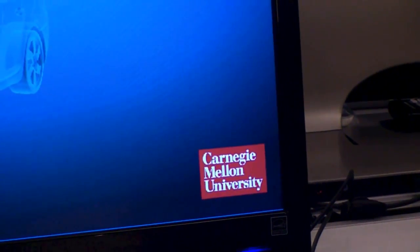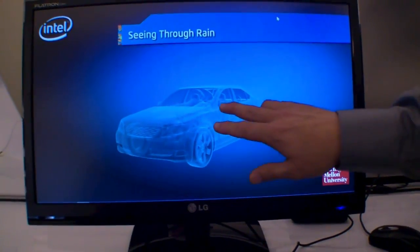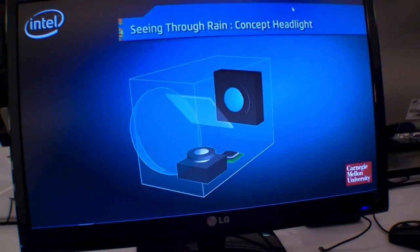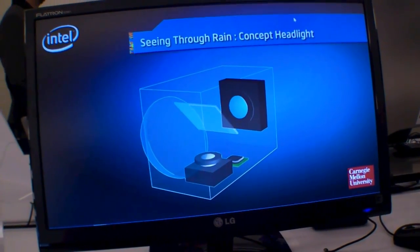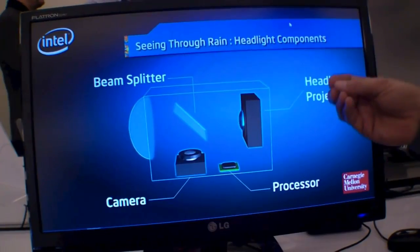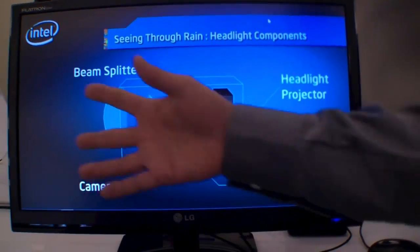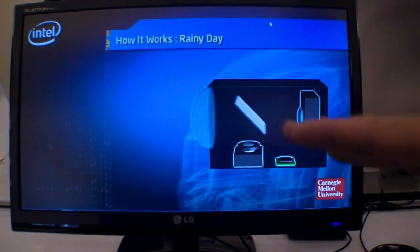In this demo, we're showing how we can develop a headlight that can see through rain. I'll step through this animation to show what we're working on. The prototype consists of a headlight projection system, a camera, and a beam splitter that can analyze rainfall as it's falling through the field of view of a headlight.